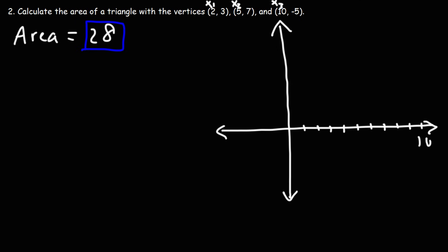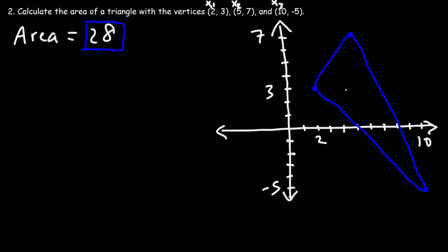We only need to go up to 10 on the x-axis, and on the y-axis up to positive 7 but down to negative 5. The first point is at 2, 3. The next one is at 5, 7, and then 10, negative 5. So we don't have a typical right triangle — what we have is a scalene triangle. How can we get the area without using matrices or determinants?